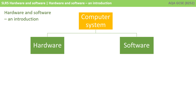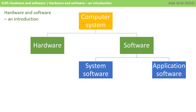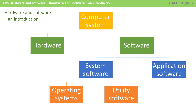A computer system is made up of both hardware and software. Software can be further broken down into system software and application software. And system software can be broken down one more step into operating systems and utility software.